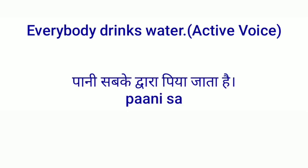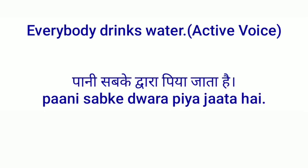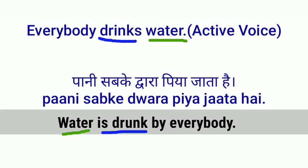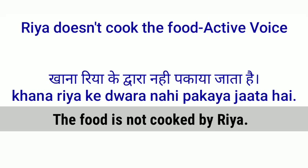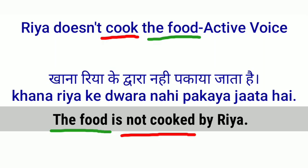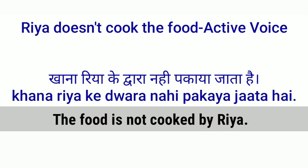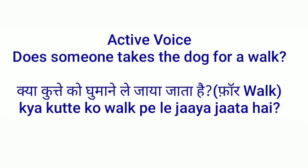'Everybody drinks water' — this is the active voice. Passive voice: 'Water is drunk by everybody.' The third form of 'drink' is 'drunk' — is + verb third form + by everybody. Water, which was the object, becomes the subject. 'Ria doesn't cook the food' — passive: 'The food is not cooked by Ria.' 'Does' is replaced by 'is,' and the third form of 'cook' is 'cooked.'